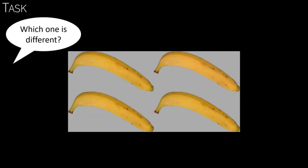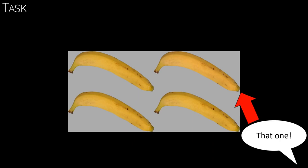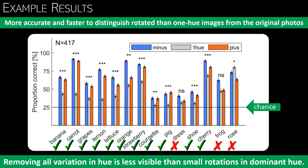We also measured how well participants could detect the images with rotated hue. And in this example, the odd one is the upper right banana. Then we compared the performance for identifying the one hue images with the performance for identifying the rotated hue images.